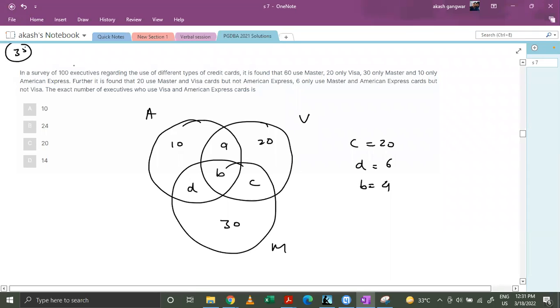Now we have a total number of 100 users. So based on that, we can say that a equals to 10. If we sum it all, then it becomes equal to 90. So that's why a is 10.